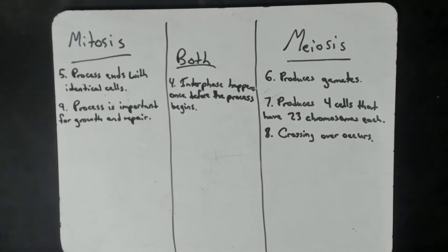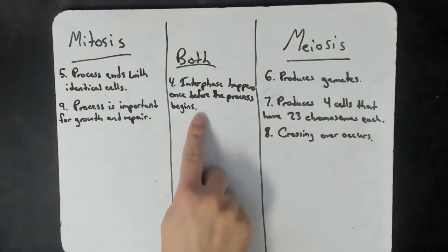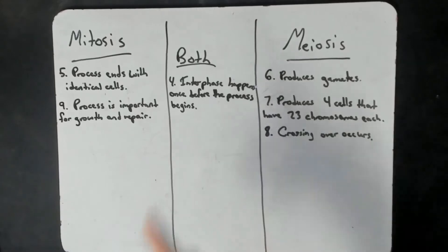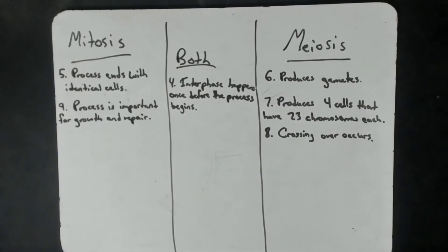The next couple questions are about mitosis, meiosis, or both. So I'm putting them all on the same board. So we have question number four, interphase happens once before the process begins. That's in both. In meiosis, we don't have an interphase in between meiosis one and two. We just go straight from telophase one into prophase two, and it continues. There's no break in between. So interphase only happens once during both of these, right before it.